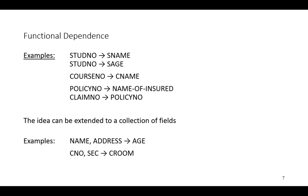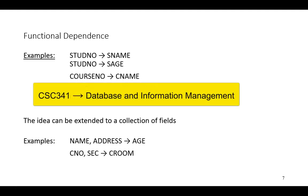In the case of course number and course name, consider that the course number CSC 341 is listed in the University Catalog with a unique course number. If you ask for the CNAME value for the course, it has the name of Database and Information Management. Thus, given the course number CSC 341, we can determine precisely the name of the course.